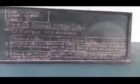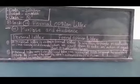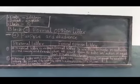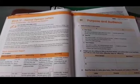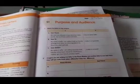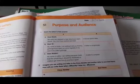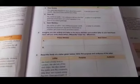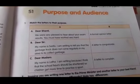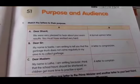Now we will describe this in our workbook and write it. Take out your workbook now. Block 17, formal opinion letter, S1: purpose and audience. Write today's date: 21, 12, 2020. Page number 5. This is your Volume 3 book. Match the letter to their purpose.